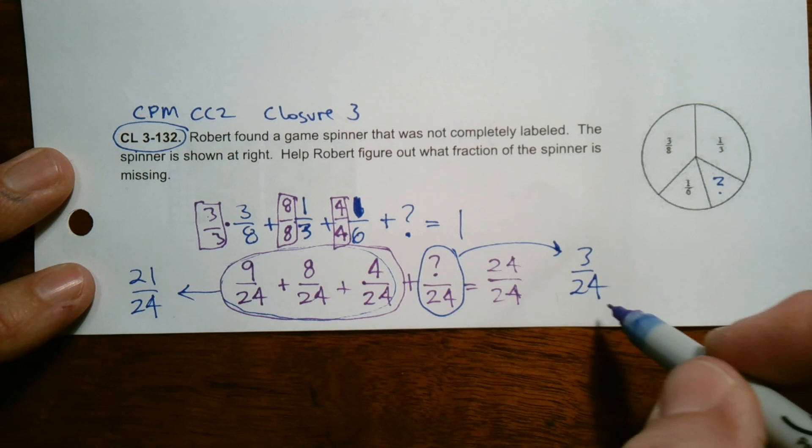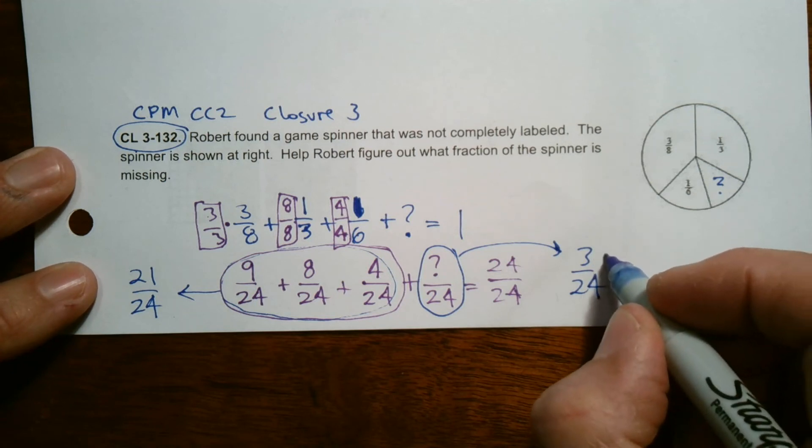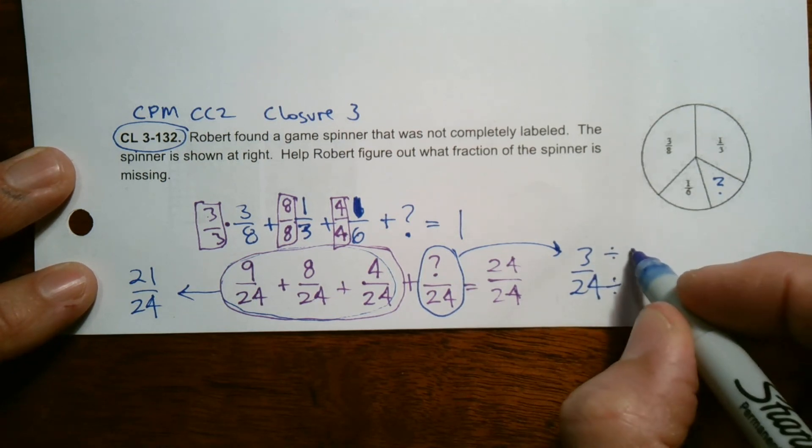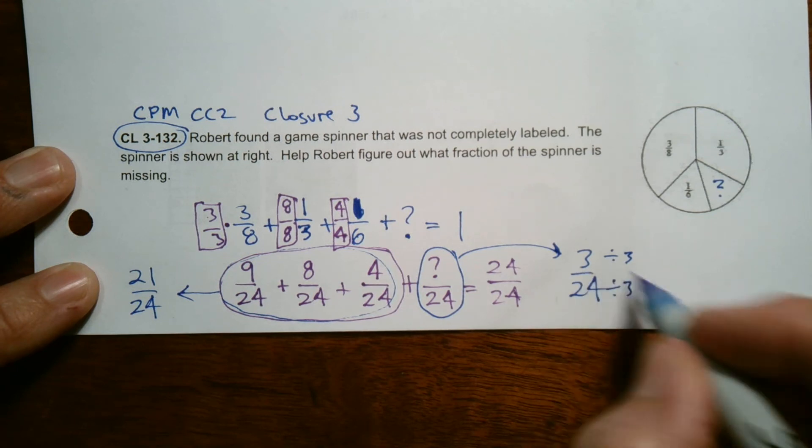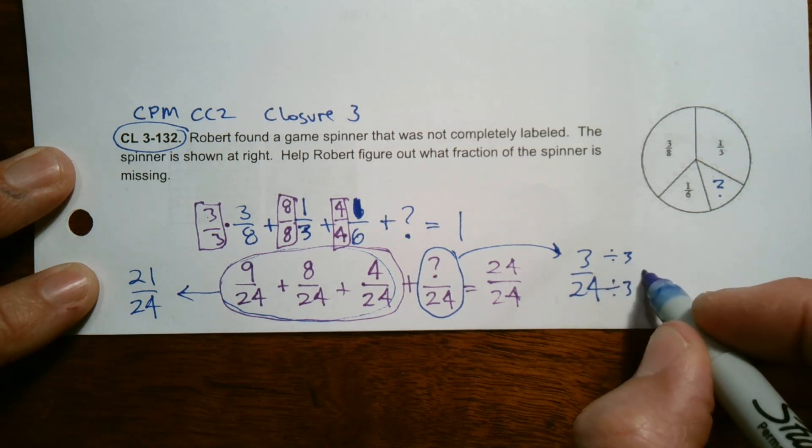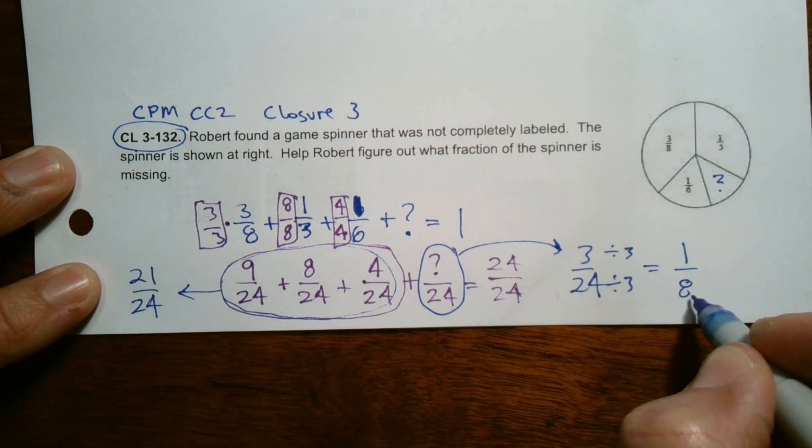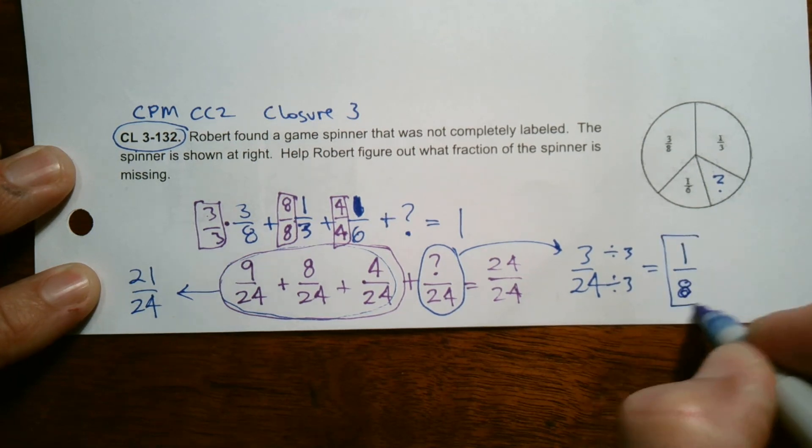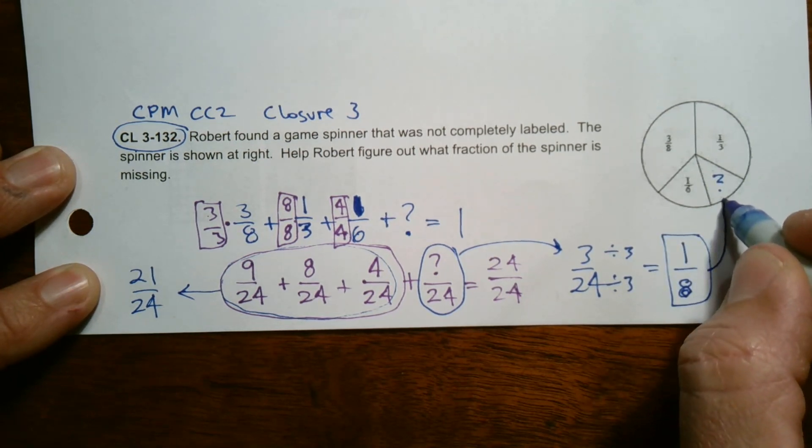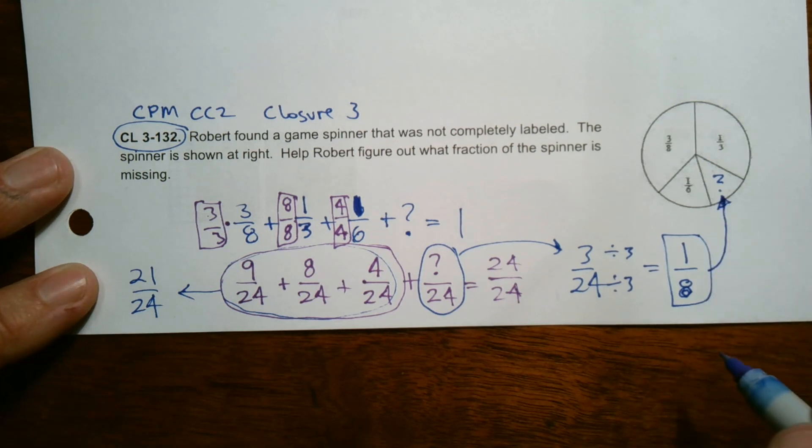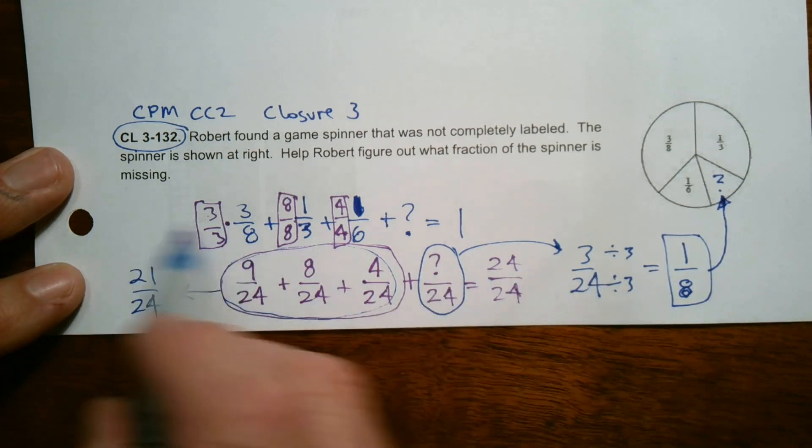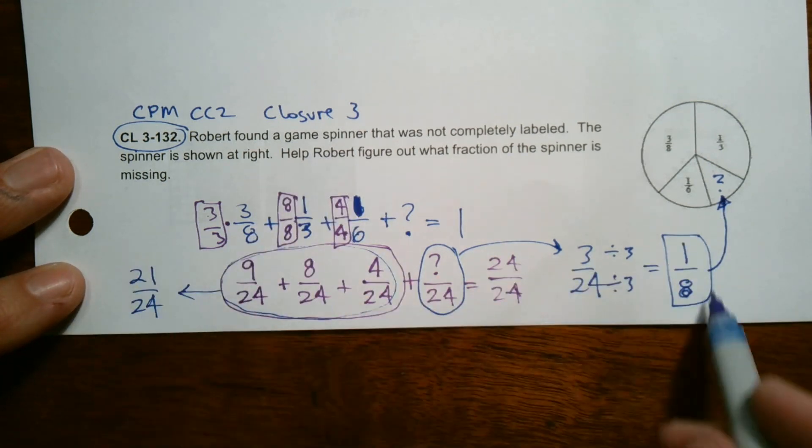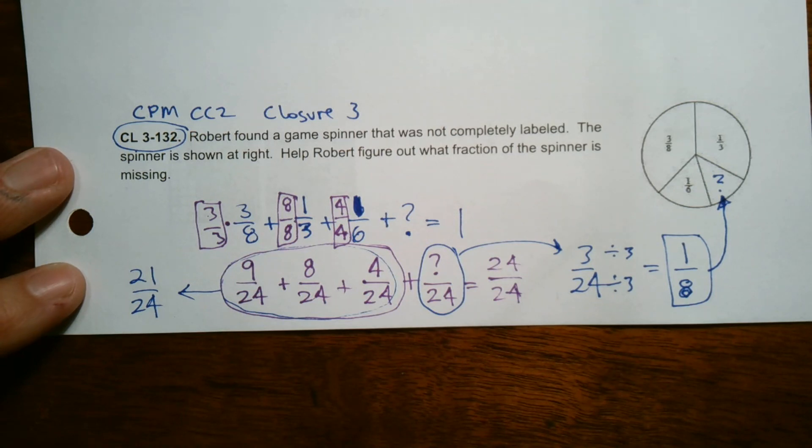So we can leave it as 3/24. But I do see that 3/24 can also simplify by dividing top and bottom by 3. It would become 1/8. So that tells me right there that the answer, that space is 1/8. Okay. And this is the reason why. So you would need to show the reason why. And that's the reason why. Okay. There we go.